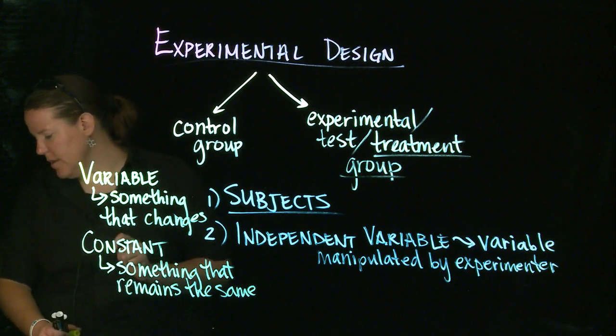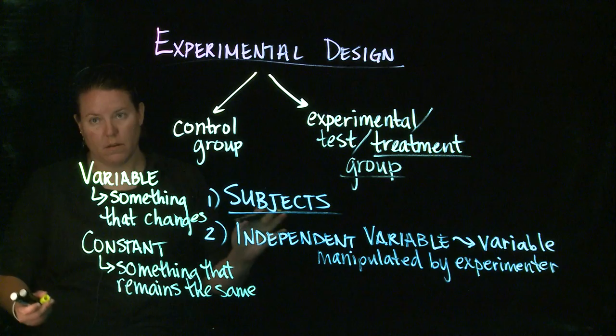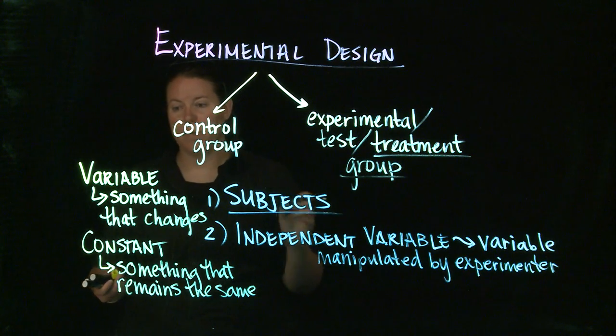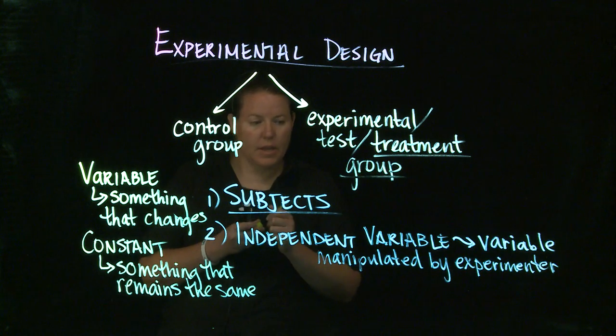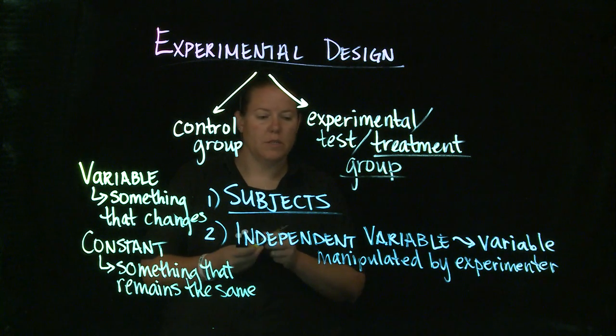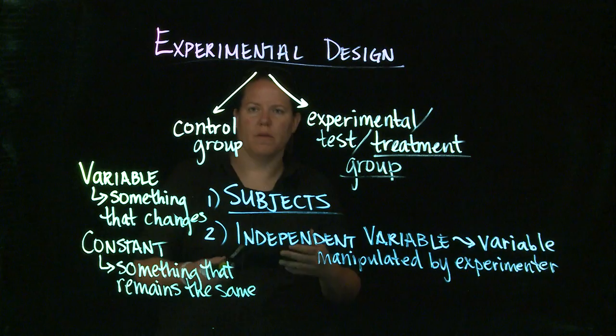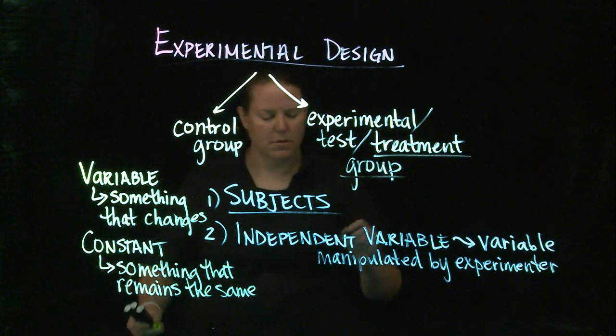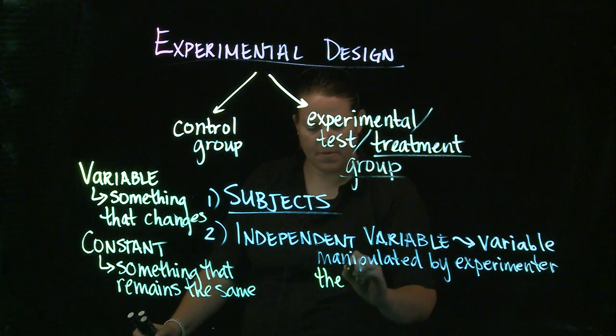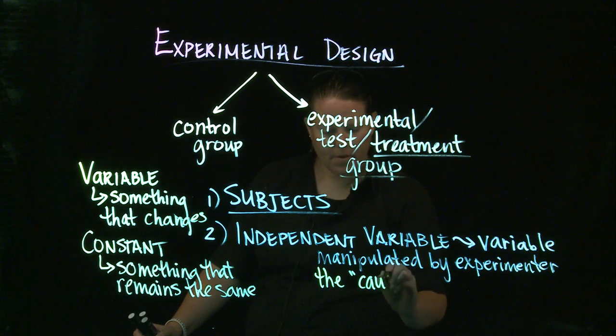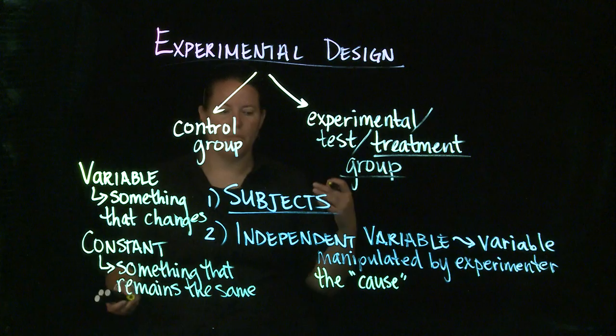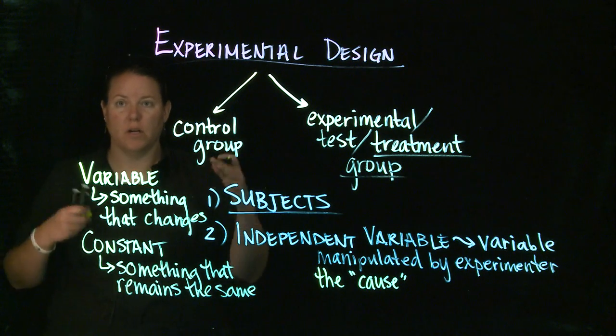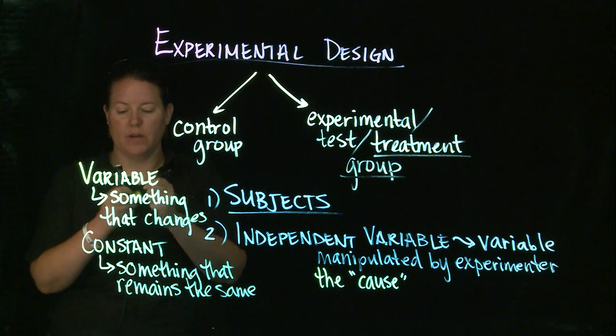So you want to think about variables and constants and you want the independent variable to be, you want this to kind of be the cause. Whatever you manipulate to cause something else. What is the something else you cause?